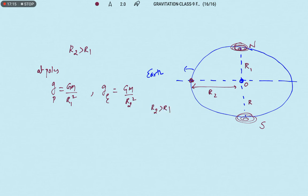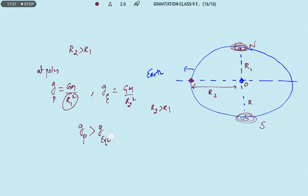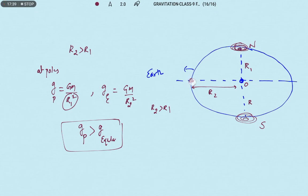Since R2 is greater than R1, and g is inversely proportional to R², when R is smaller g will be more. Therefore, acceleration due to gravity at the pole is greater than acceleration due to gravity at the equator, because at the equator the radius of the earth is maximum. So acceleration at poles is maximum compared to acceleration at the equator.